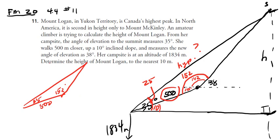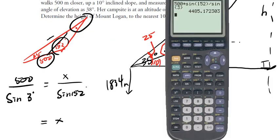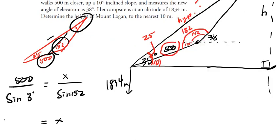So what I can do is find this angle and use the sine law to find this side. I have an angle and its paired opposite side. I have this angle and I could find this one. So this is how you set that up. We get x here as 4485.17.